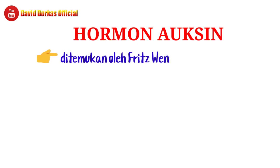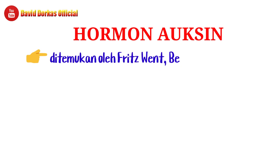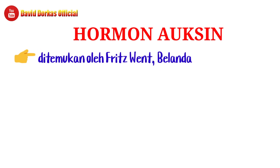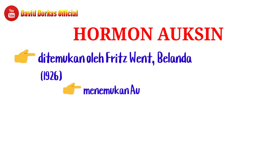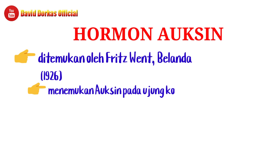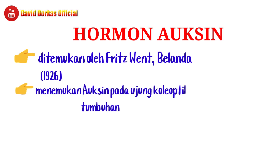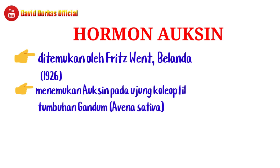Hormon auxin ditemukan oleh ilmuwan Belanda Fritz Went. Auxin sendiri dari asal katanya berarti 'menggiatkan'. Di tahun 1926, dia menemukan hormon auxin melalui penelitian pada tumbuhan gandum Avena sativum, pada ujung koleoptil atau selaput pelindung daun.